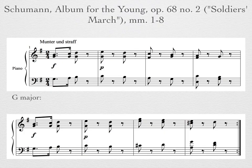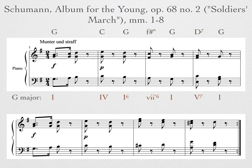Let's start off by listening to an example from the beginning of Schumann's Soldiers' March. By doing some quick analysis, we can see the jazz chords for the first four measures are harmonies that we're accustomed to seeing in G major. I, IV, VII diminished, and V7 are all harmonies that we've seen before.